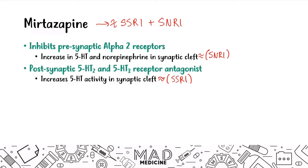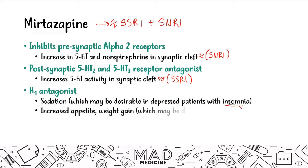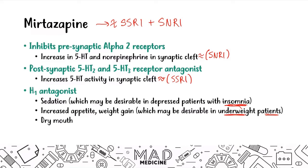Mirtazapine also antagonizes H1 histamine receptors, acting like a histamine blocker, which leads to sedation. This can be desirable in patients with insomnia. It also leads to increased appetite and weight gain, which is desirable for underweight patients suffering from anorexia and depression simultaneously. It can also lead to dry mouth. That's pretty much all you need to know about mirtazapine.